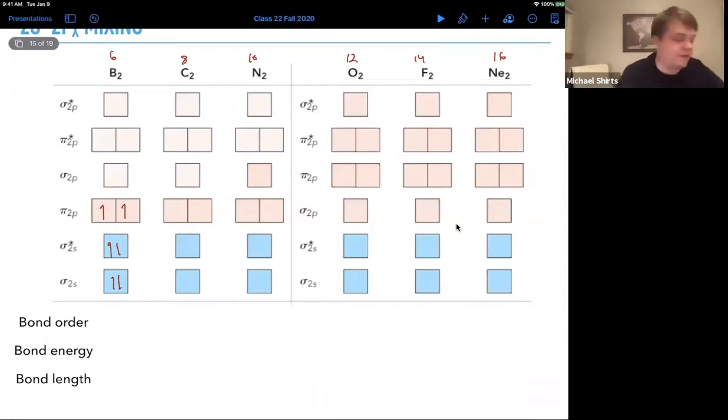Carbon, we've got eight atoms. One, two, three, four, five, six, seven, eight. And so, we filled up through a pi 2p. It's diamagnetic.